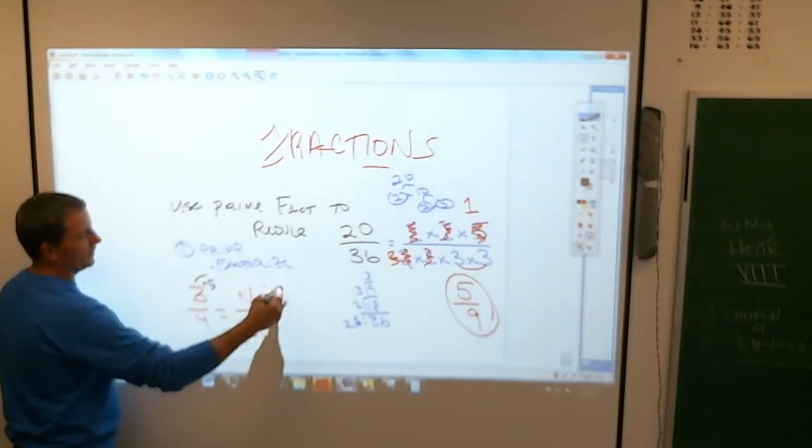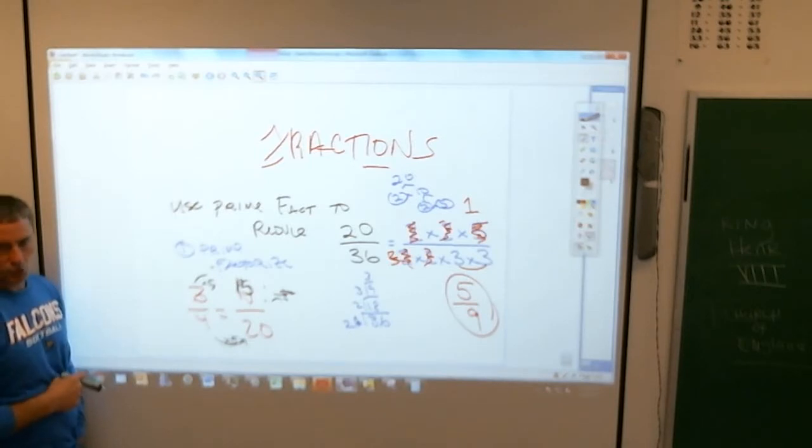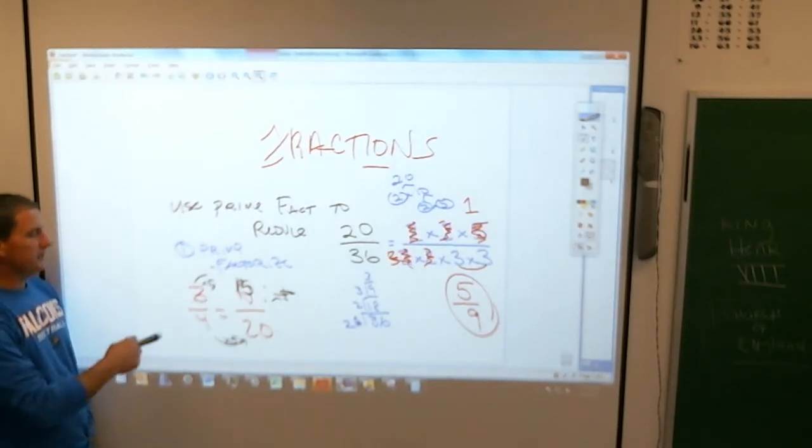Can anybody tell me why that works, or why that is? You can get 15 right. Anybody, why does that work? Explain to me why that's true. Have I done? I'm exhausted? No. Negatory, I don't think. Anybody? Why is 3 fourths the exact same thing as 15 twentieths?